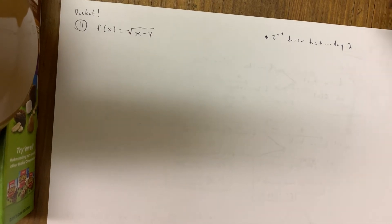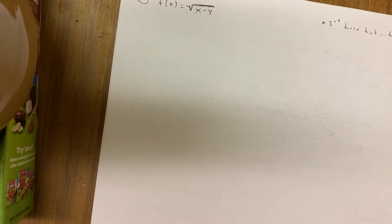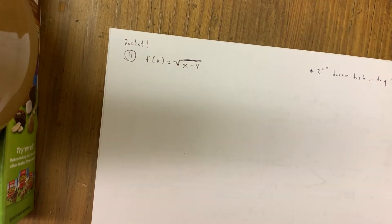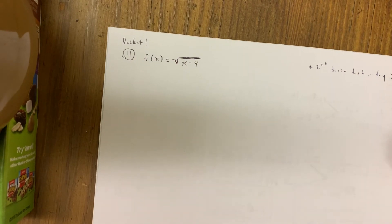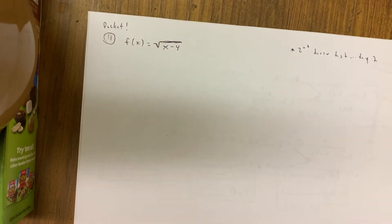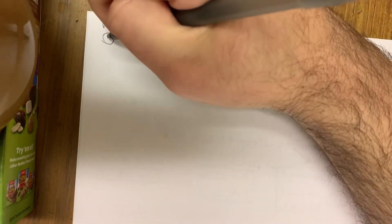Second Derivative Test Day Two — let's talk about other types of functions. The whole world isn't polynomial all the time. Take a look at number 11 in your packet — we're on the 1.2 curve sketching packet. The whole purpose of this topic is to be able to sketch without a calculator. Let's perform the first and second derivative test on this radical function and see if we can get a sketch going.